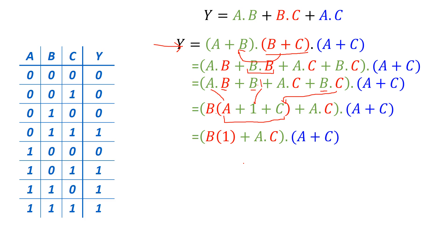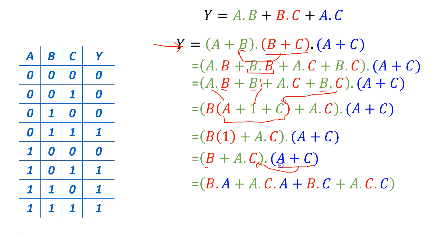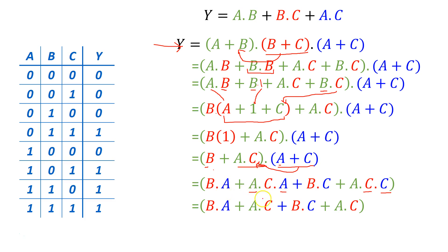Now we distribute (A OR C) inside: BA, AC AND A (which is AC), BC, and AC AND C (which is AC). So we get BA, AC, BC, AC.